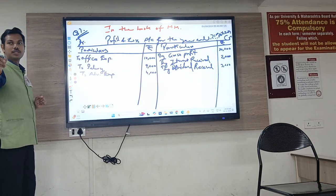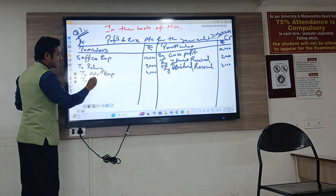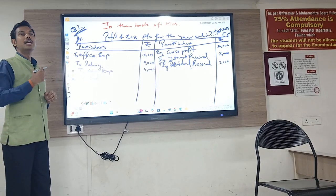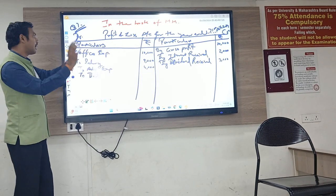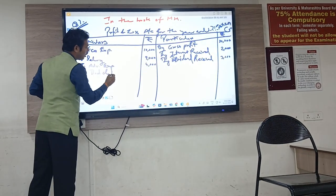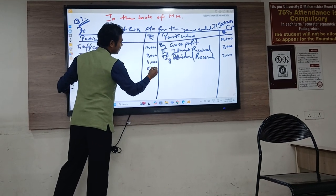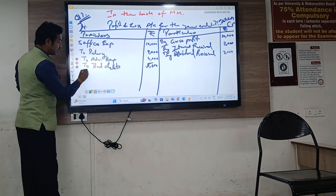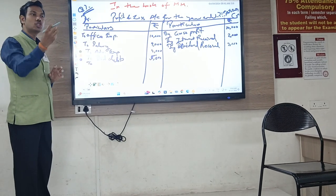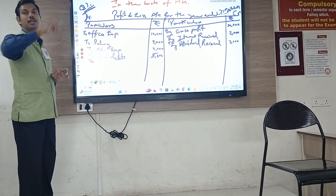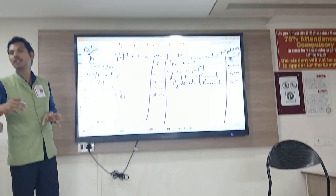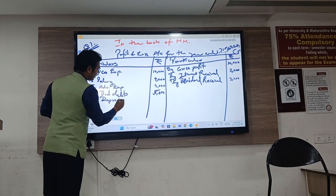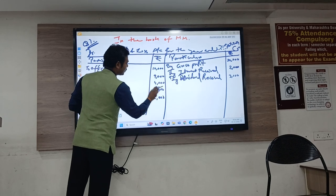Bad debt: the business gave credit facility to customers, but those customers did not pay back. The policy was made by managers, and that is the reason the business is suffering a kind of loss. So bad debt: 5,000. Next: Depreciation 2,000. Depreciation is not exactly an expense but an accumulation — we are creating a fund so that money is available in the future to purchase new machinery or replace assets. So on the profit and loss debit side: Depreciation 2,000.